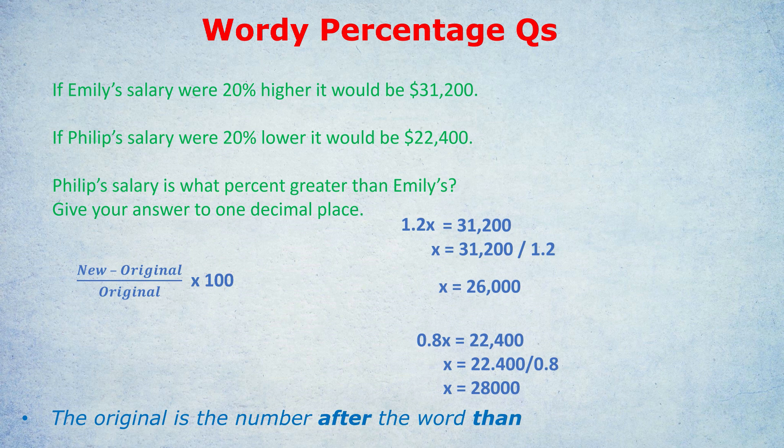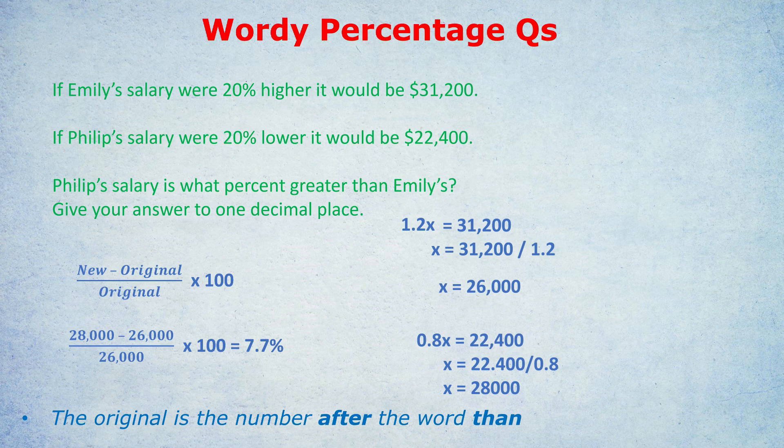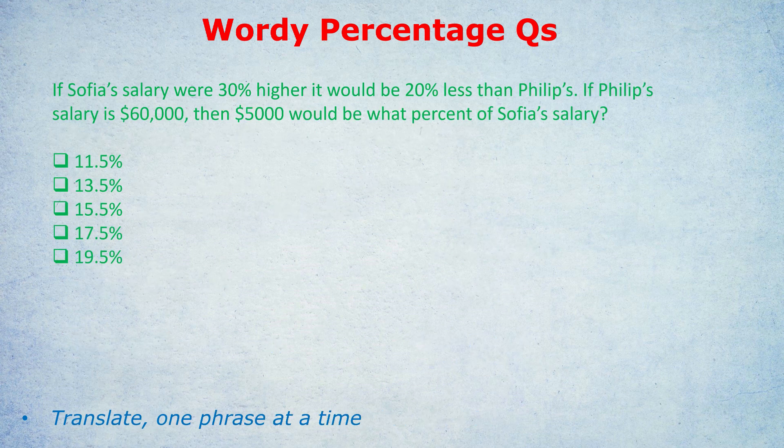So here, the new would be Philip because the original was Emily, because Emily comes after the word than. So we would do 28,000 minus 26,000 divided by 26,000 because Emily was the 26,000. I probably could have done E for Emily and P for Philip. Maybe you shouldn't have used X both times, but you can improve on my working out with even clearer algebra. Either way, that's the formula and it gives you 7.7%. Okay. We covered a lot there, but I did promise you in the title, it would be a wordy percentage set of questions. So let's get to the next one.